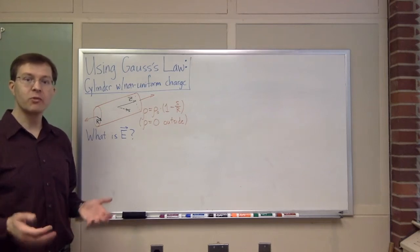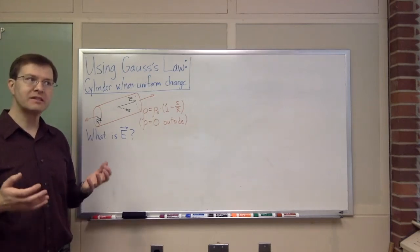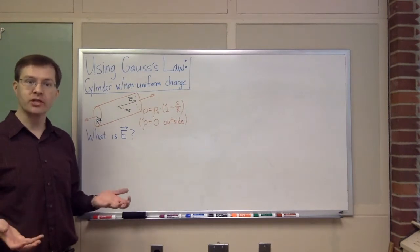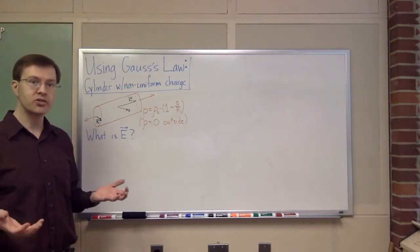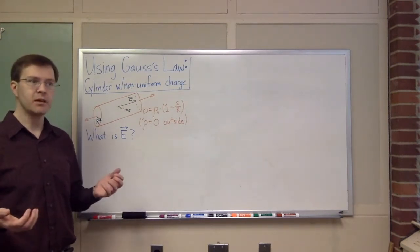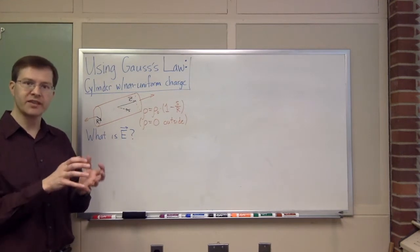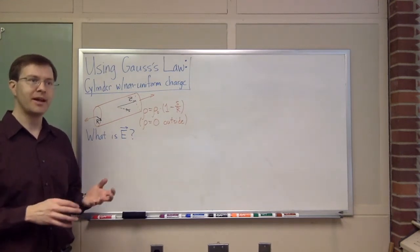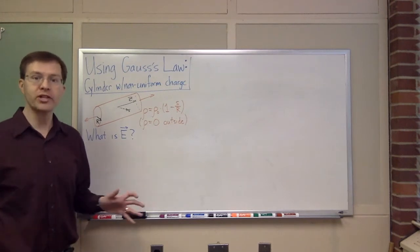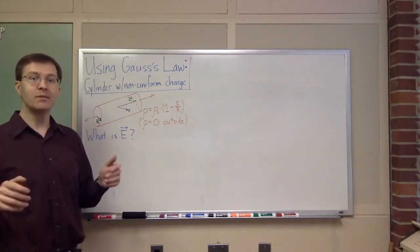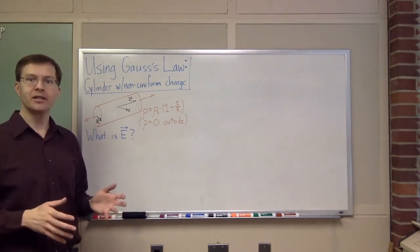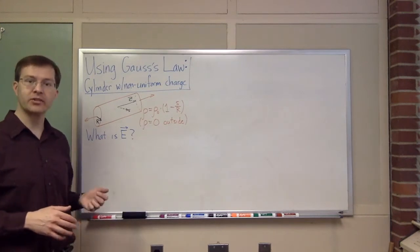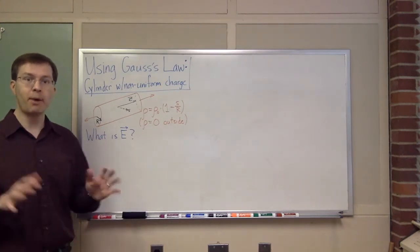When you study electromagnetism, one of the most important principles relating electric fields and electric charges is Gauss's law. Gauss's law is the relationship between the behavior of fields at a given point and the electric charge density at that point. It's powerful, it's always true, and in most cases it's really hard to use it effectively to figure out what the electric field is due to a charge distribution.